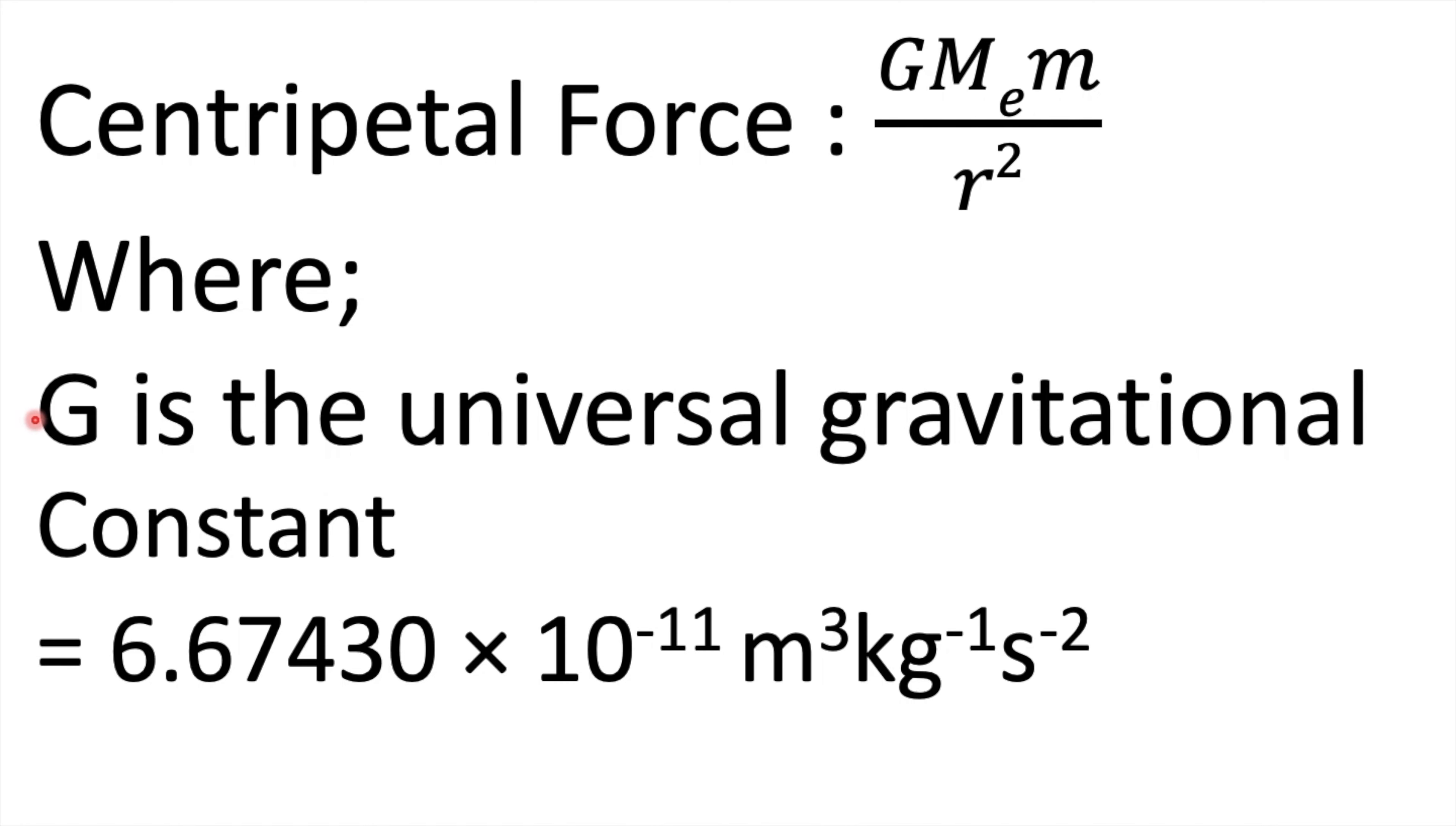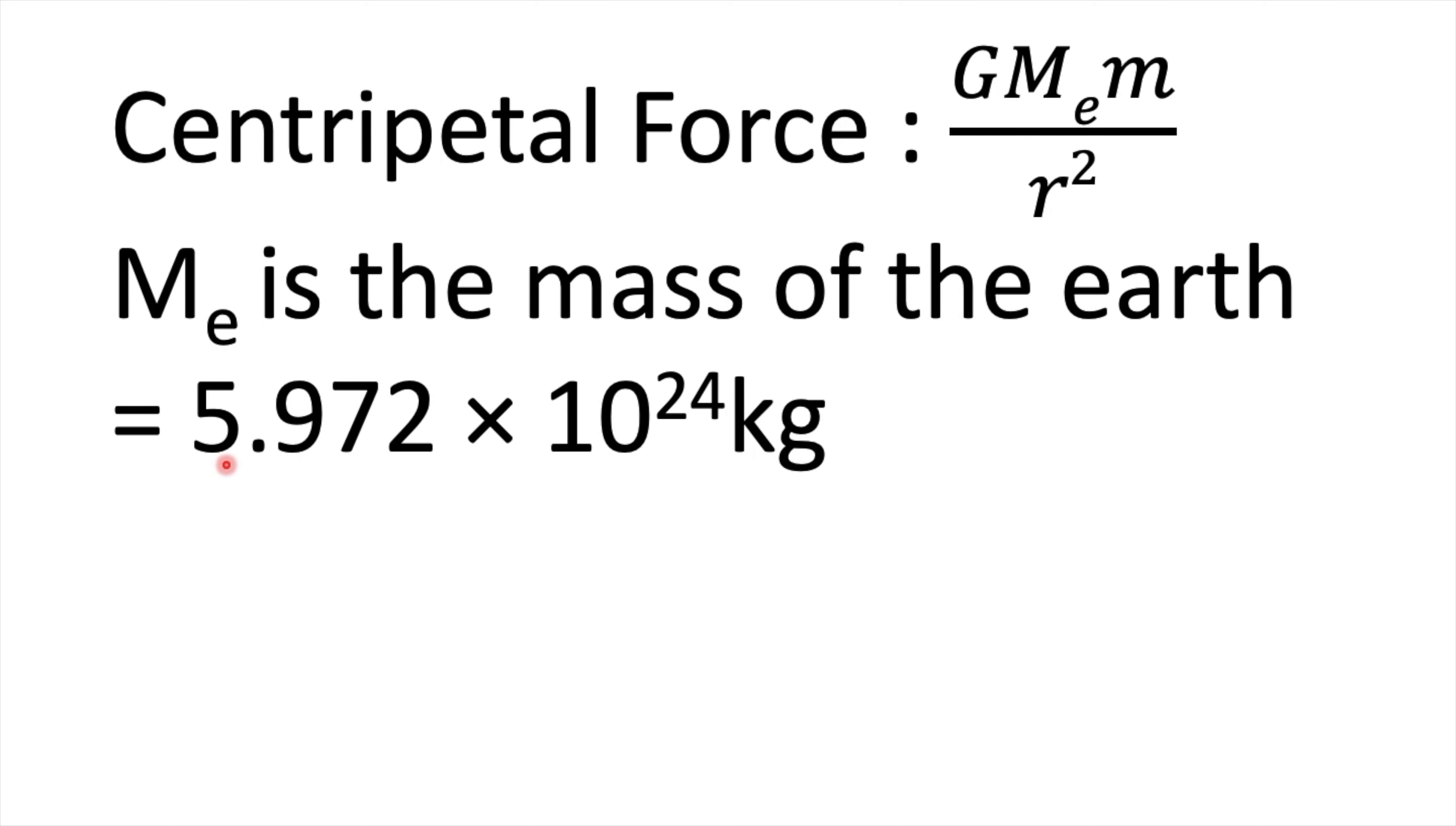The centripetal force is given by the formula G M_e m divided by r squared, where G is the universal gravitational constant which equals 6.67430 times 10 to the power minus 11 meter cubed per kilogram per second squared.